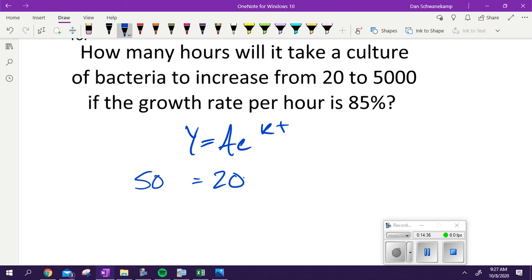Y equals A e^(kt), just like half-life. I'm starting with 5000... I'm sorry, I'm starting with 20. I'm trying to get to 5000. e. I know what my k is. k is my growth rate. What am I plugging in for k? 0.85.